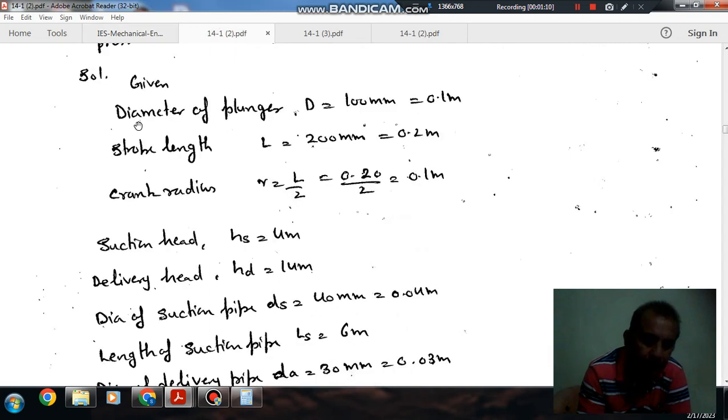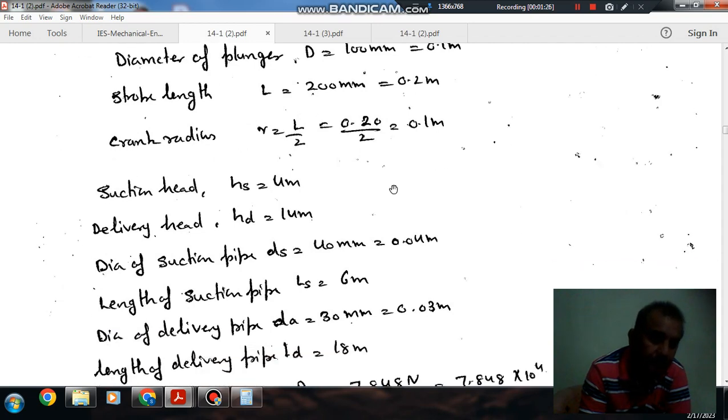So here, the diameter of the plunger is given as 100 mm or 0.1 m, and stroke length is 200 mm or 0.2 m. Then crank radius is half of stroke length, that is 0.1 m, and suction head and delivery head are given as 4 m and 14 m respectively.